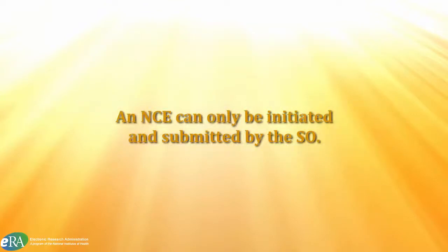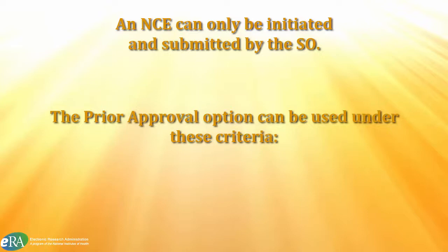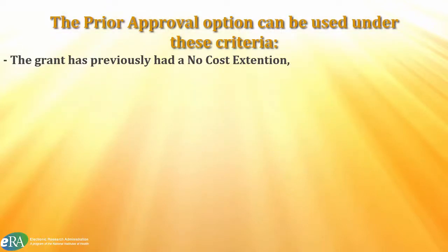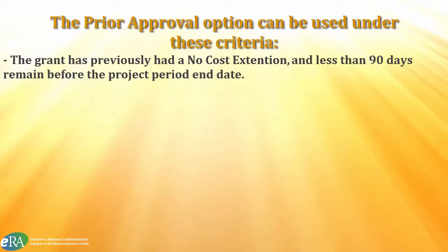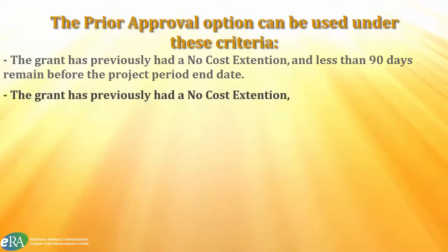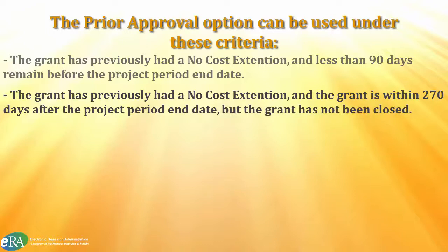A No-Cost Extension request can only be initiated and submitted by a signing official. The request through the Prior Approval option can only be initiated under these criteria: the grant has previously had a No-Cost Extension and less than 90 days remain before the project period end date, or the grant has previously had a No-Cost Extension and the grant is within 270 days after the project period end date has passed, but the grant has not been closed.